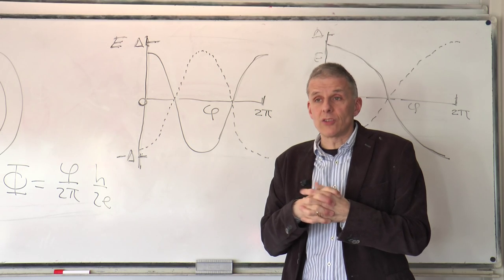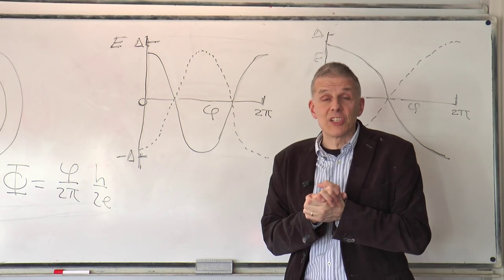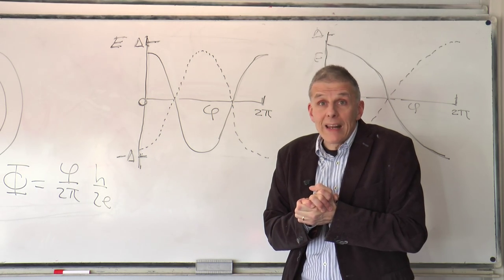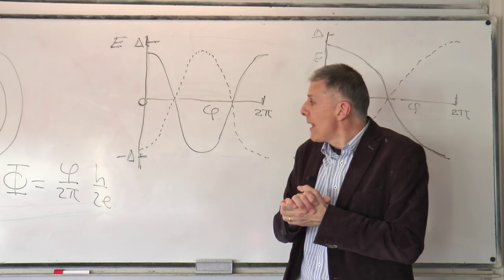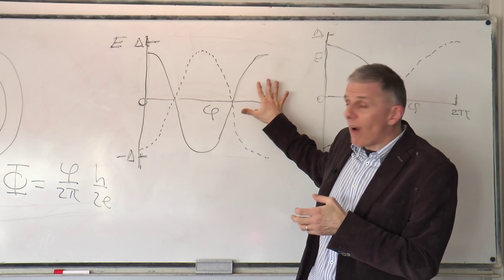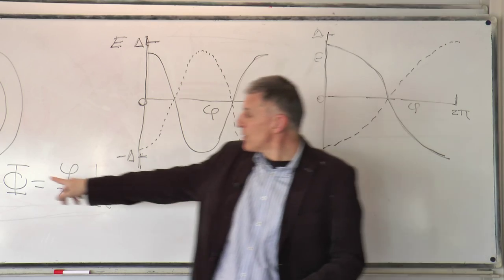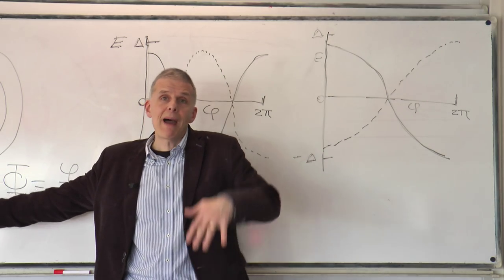Now we turn to the second signature, which is the appearance of these zero modes, this Majorana resonance at zero energy. To start, to arrive at these starting from this picture, I would take this junction here, and I would make the barrier higher and higher. Basically, I am cutting the ring.